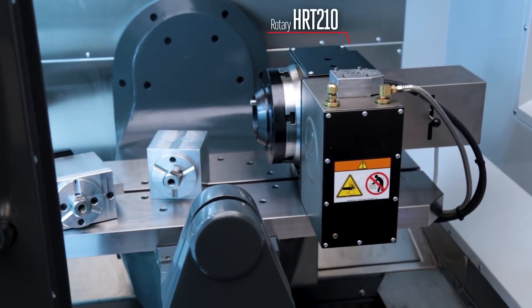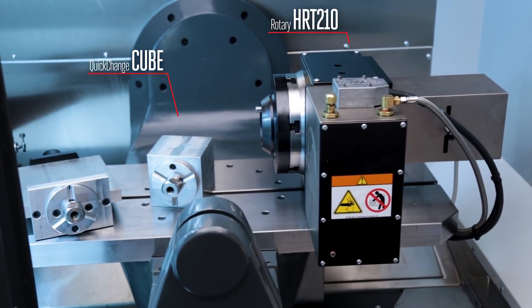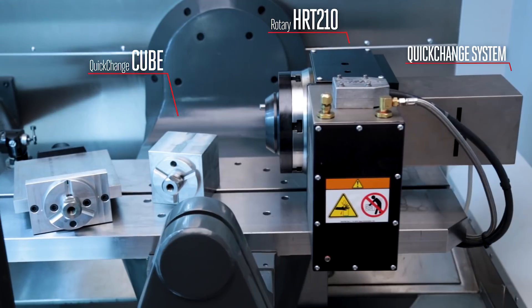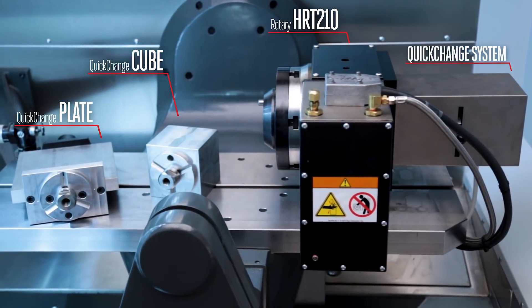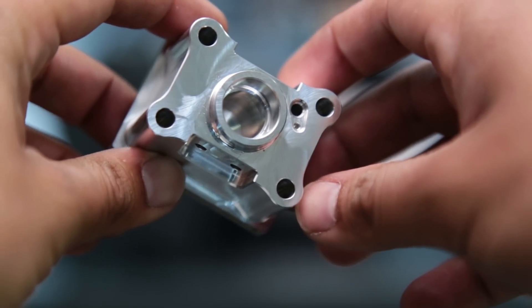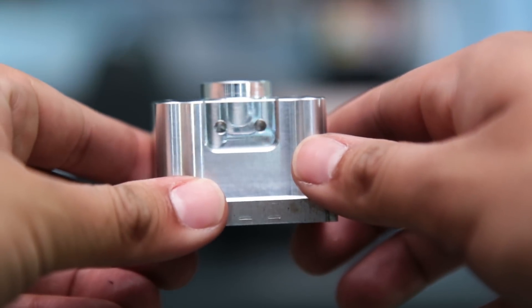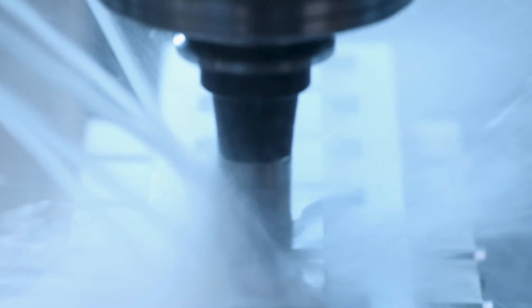The 210mm diameter rotary on the table provides a unique opportunity to use a variety of fixtures and can be very efficient when doing production work. My part has features on the top and two sides, so I'm going to make a rotary fixture so I can machine all of these features in the first operation.